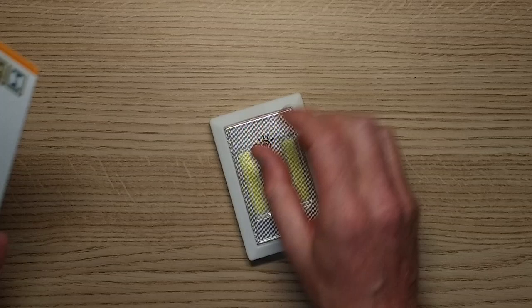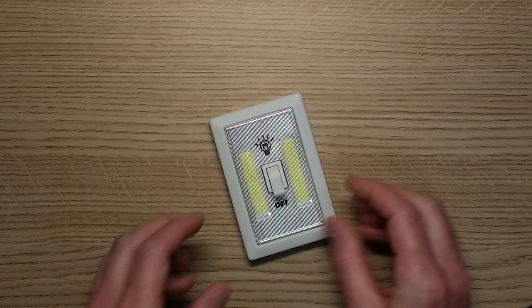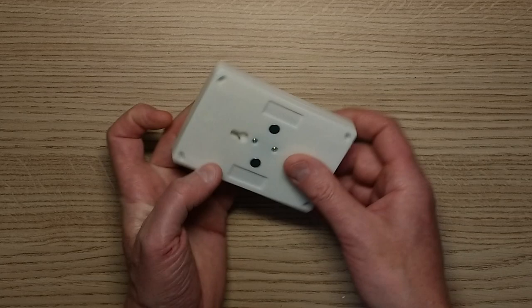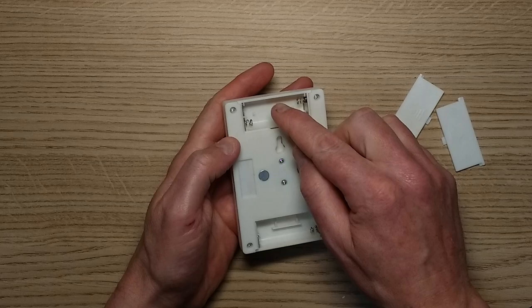So it comes with two velcro pads for sticking it onto walls, which is probably a terrible idea. It's got magnets as well, and it takes AAA cells. It's got three positions and a blank position. Let's load it up with cells.